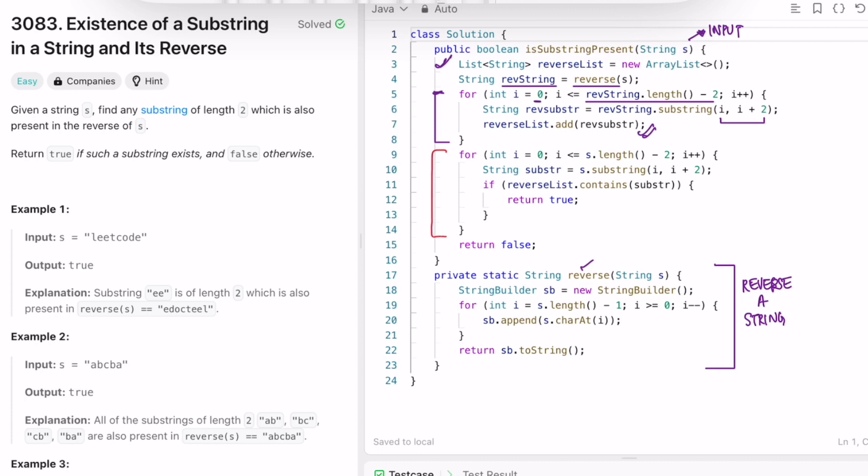Now I'm iterating through the string s to form substrings on the input string s. I'm taking substrings of size 2 and checking if this substring is present inside the reverse list. If this condition satisfies, we'll return true and come out of the program.